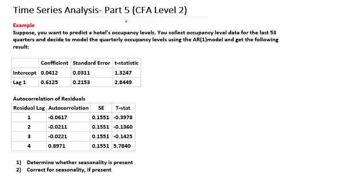In this example, suppose you want to predict a hotel's occupancy levels. You collect occupancy level data for the last 53 quarters and decide to model the quarterly occupancy levels using an AR1 model. The AR1 model is given as ln(x_t) equals B0 plus B1*ln(x_{t-1}) plus e_t, and you are given the results for this model.